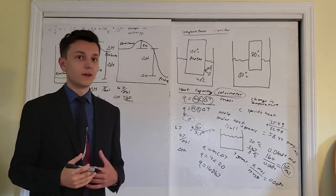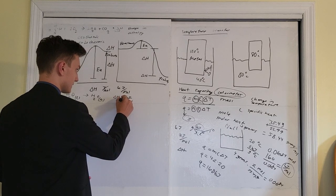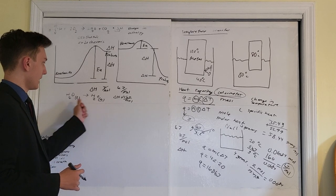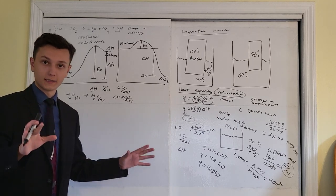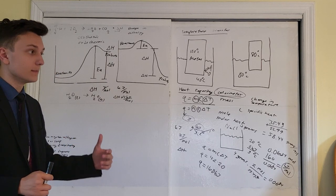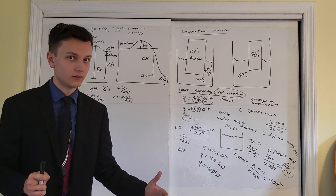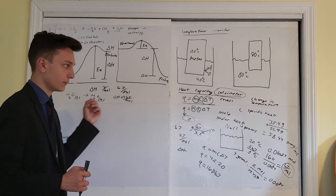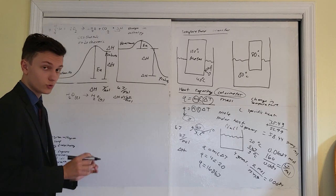You can have positive and negative delta H values. A positive delta H means the products gained energy in the reaction. A negative delta H means the products lost energy — which means the environment gained energy. A negative delta H indicates an exothermic reaction; a positive delta H indicates an endothermic reaction.